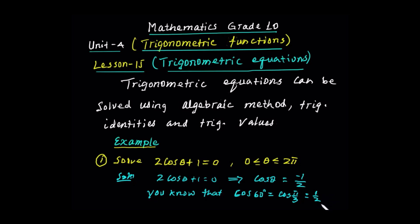The algebraic sign changes. Let's see the reference angle. We know that cosine of 60 degrees, or cosine of pi over 3 in terms of pi, is equal to one half. So the reference angle theta r is pi over 3. Cosine of theta is negative one half, so cosine is negative — that means theta is in the second quadrant and in the third quadrant.